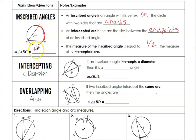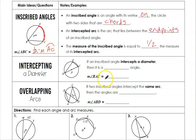Just keep in mind as we go through this lesson that the inscribed angle is always half of its intercepted arc.